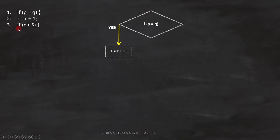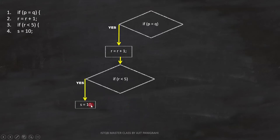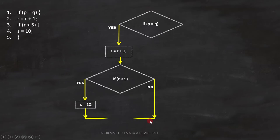Line number 3 is: if r is less than 5. This is a condition, and we can represent it like this. Line number 4 is s equals 10. This will execute when the if condition is true, and we can represent it like this. At line number 5, the bracket is closing — this closing bracket is for line number 3, meaning the condition on line number 3 ends here. In the flowchart, we can represent it like this.